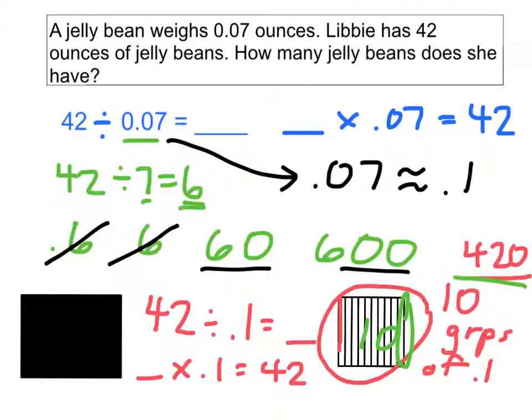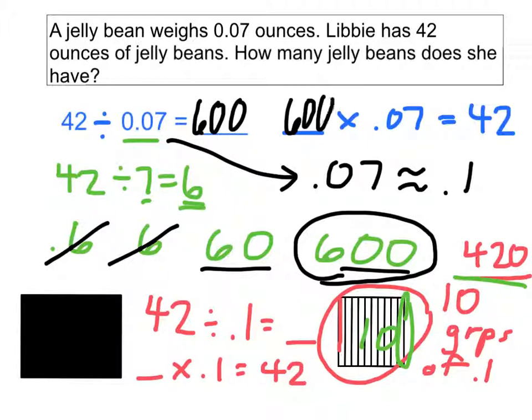Which of my answers is closest to 420? Yep, you're right. 600 is the closest. So, I would fill in here 600. And I can check to see, does it make sense? Yes, it does make sense, because I'm taking a number of 42, I'm dividing it by a very small number, just 7 hundredths, and I'm going to get a large amount of jelly beans. So, she has 600 jelly beans. Wow, that is a lot of jelly beans.